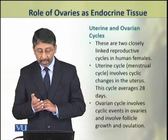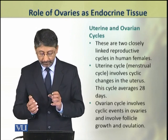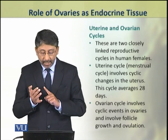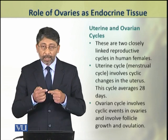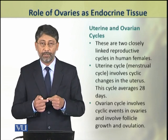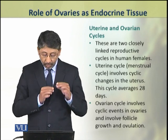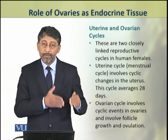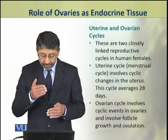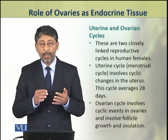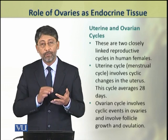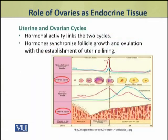The uterine cycle, also called the menstrual cycle, involves cyclic changes in the uterus. These cycles are linked — the hormones connect the activity of the ovarian and uterine cycles.